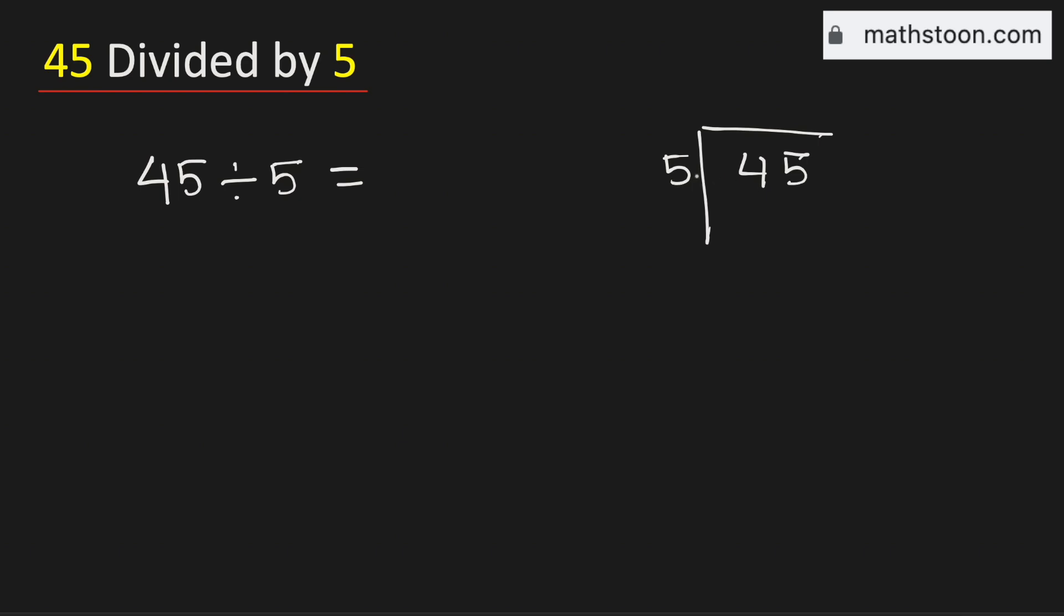Now from the multiplication table of 5, we know that 5 times 9 is 45. Now subtract, we get 0.